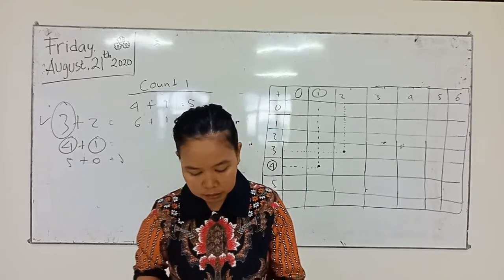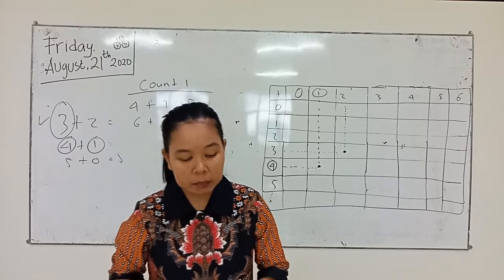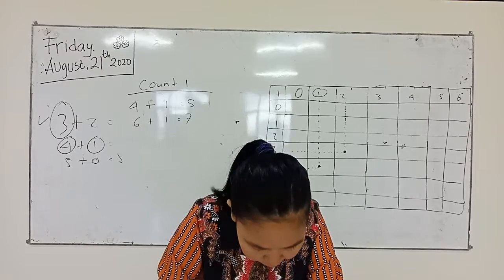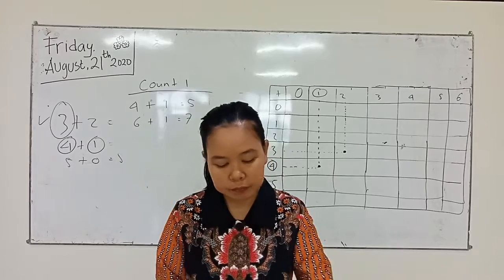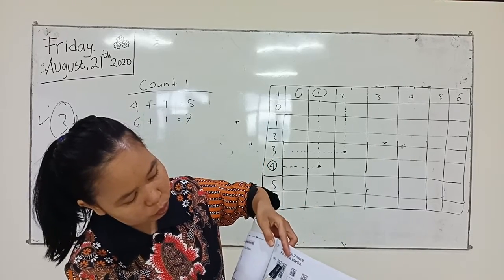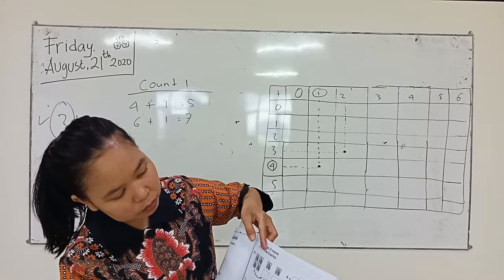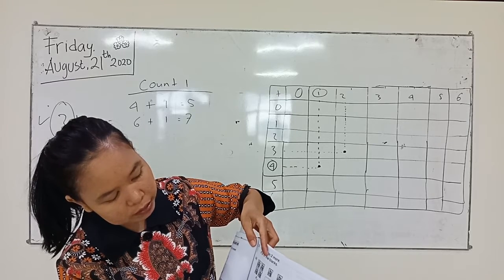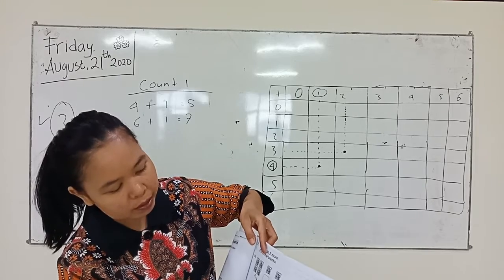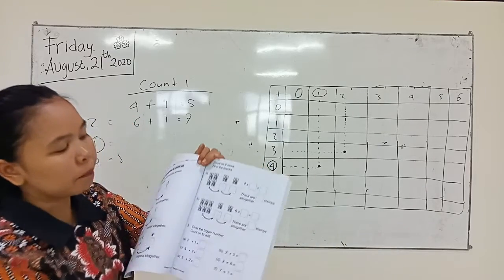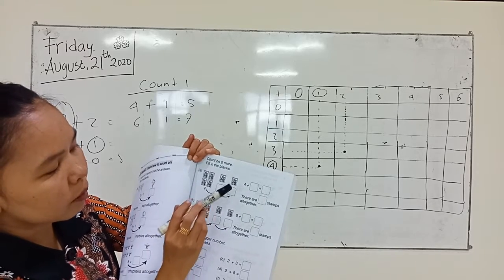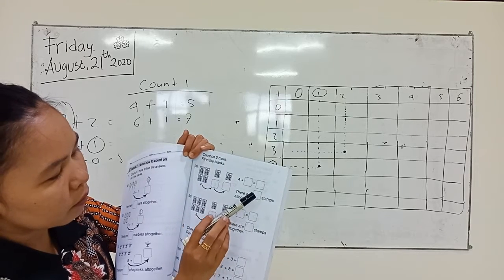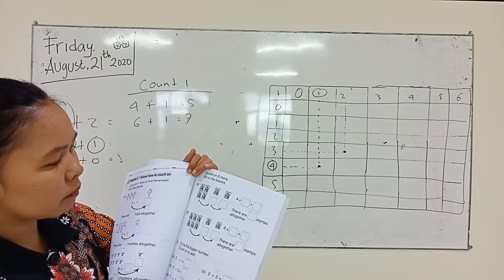Lalu halaman 29 itu sama. Misalkan yang A: gambar kartunya ada 4 — 1, 2, 3, 4. Kita tulis 4 disini, lalu ditambah 1: 4 ditambah 1 jadi 5, tulis 5 disini. Lalu 5 ditambah 1 sama dengan berapa? 6. Lihat gambarnya: 4 ditambah 1, lalu ditambah 1 lagi. 4 ditambah 1 sama dengan 5. There are 5 steps, seperti itu ya.